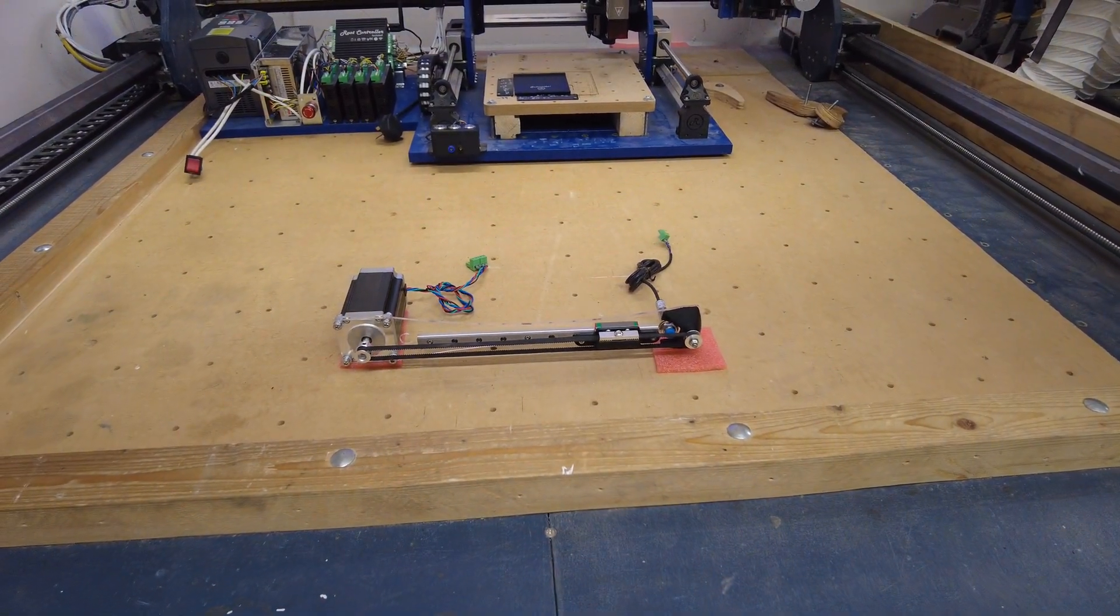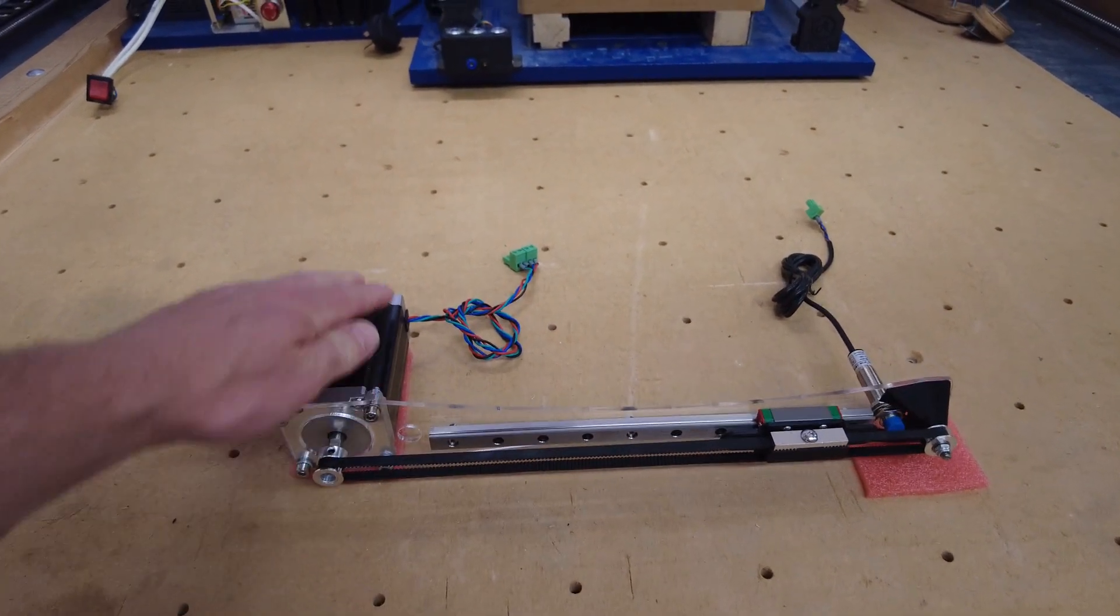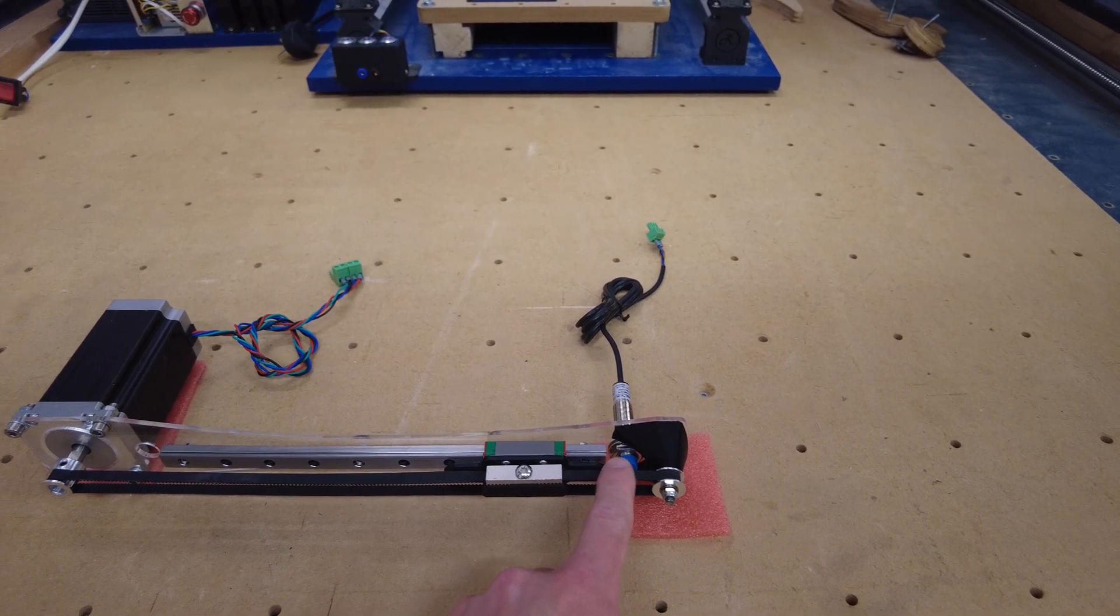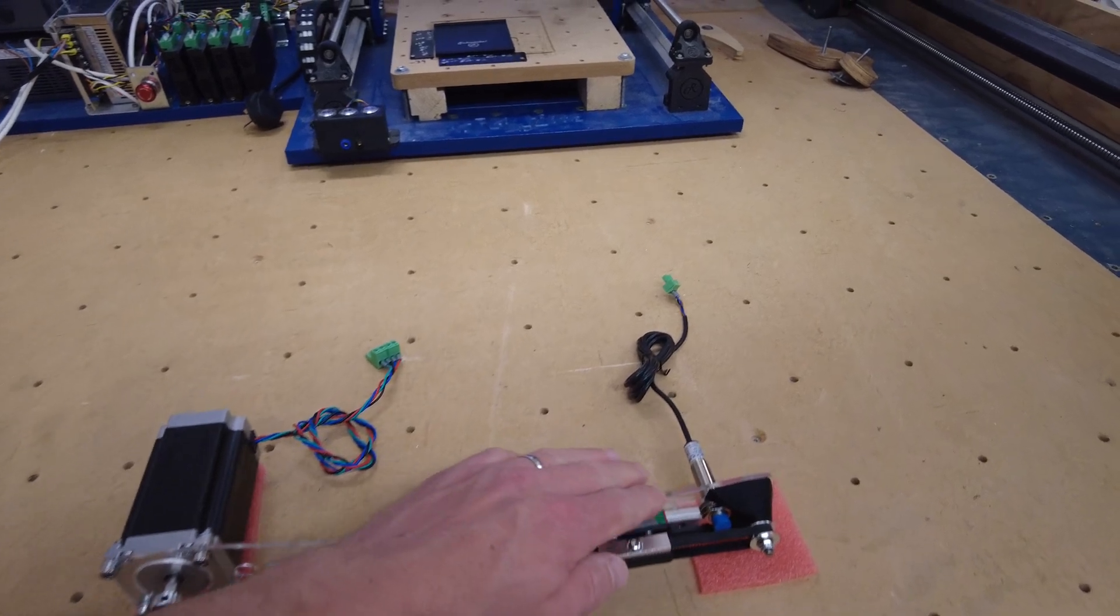This could be a ball screw, rack and pinion, and in our case we've got a belt on a linear guide. For this one we're going to use a stepper motor with a stepper motor driver driving this.